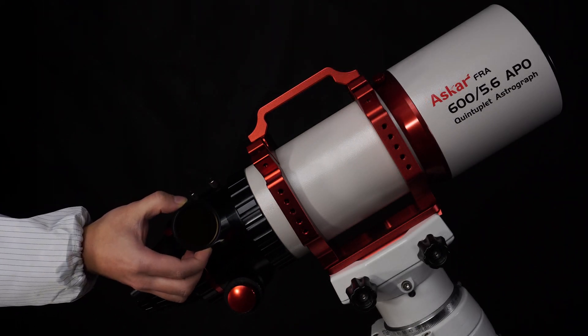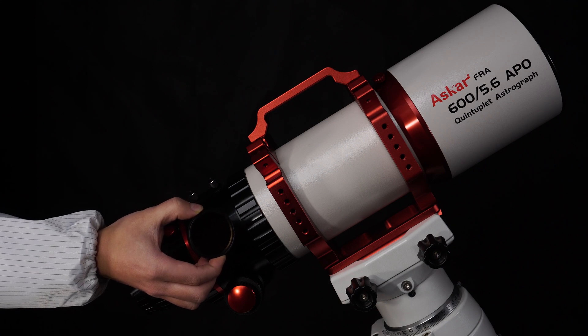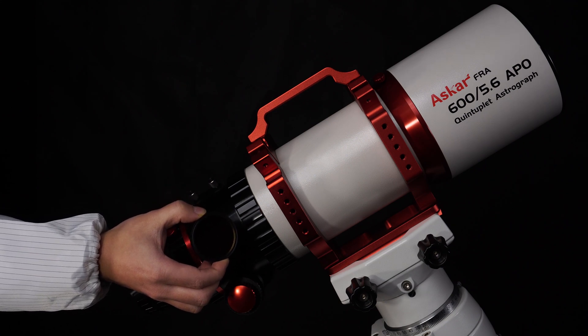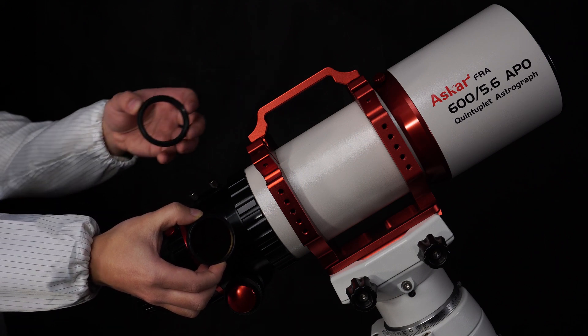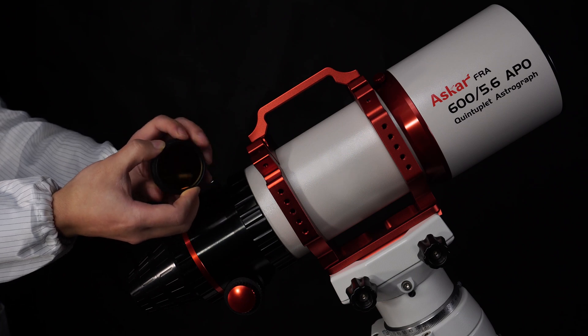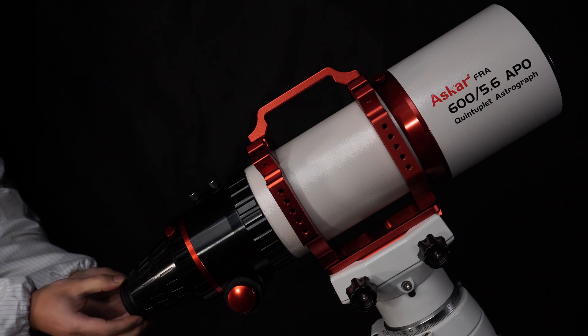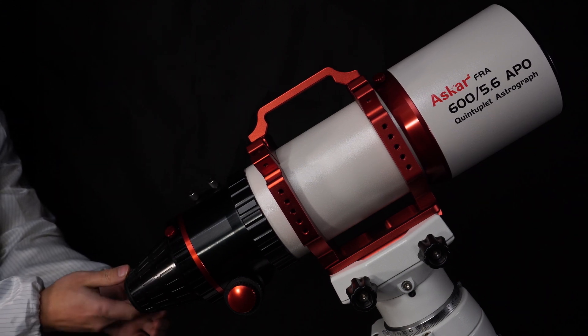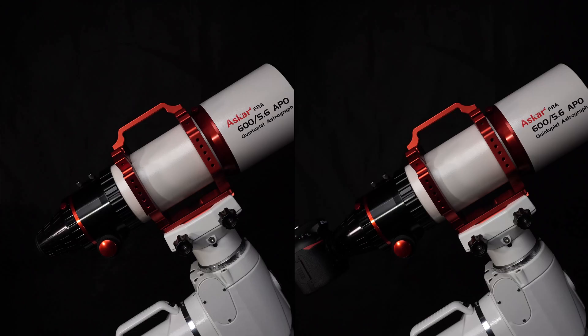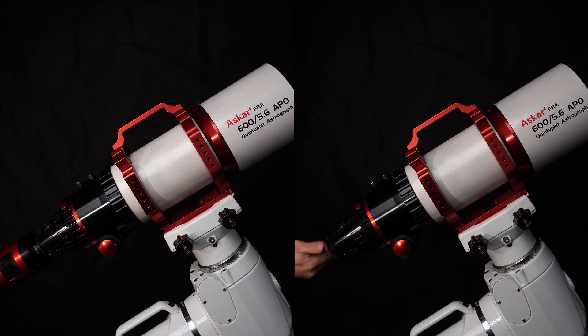This is a piece of 2-inch S2 filter. We also provide optional LRGB SHO dual-band filters, coming in different sizes. Thread the 2-inch filters on the ring, and put it back to the conical extender. It also accommodates astronomy cameras and DSLR cameras with the same thread type.